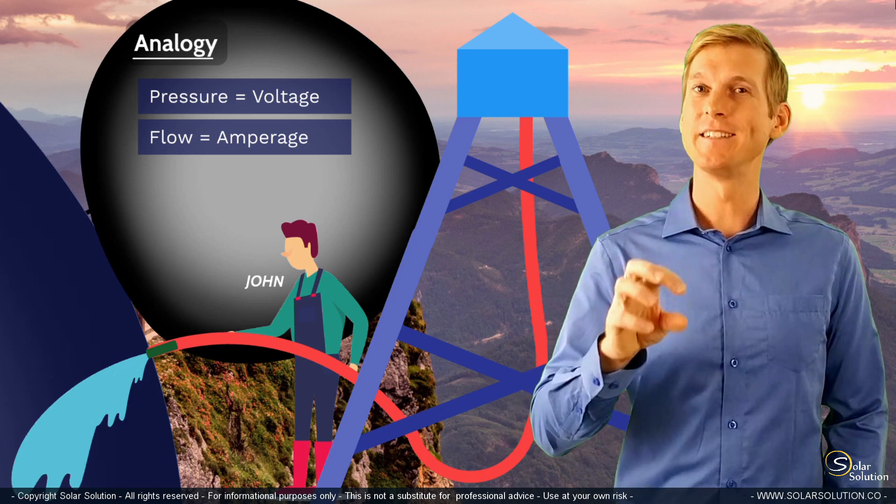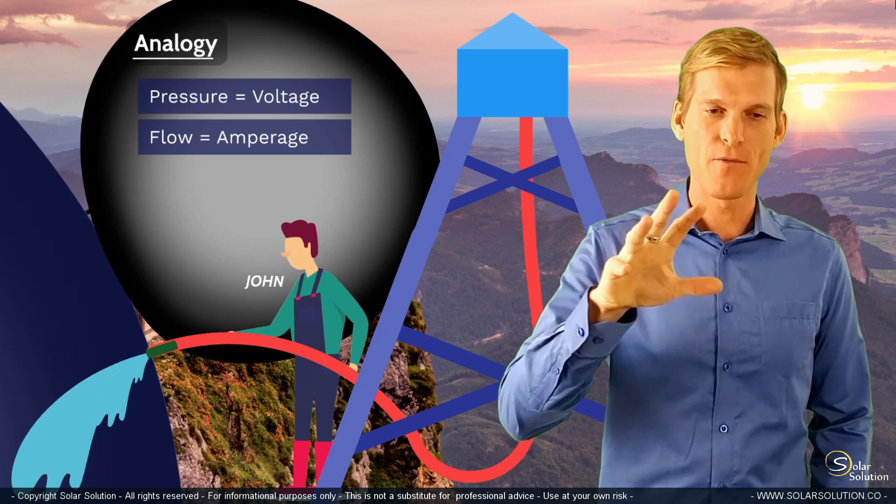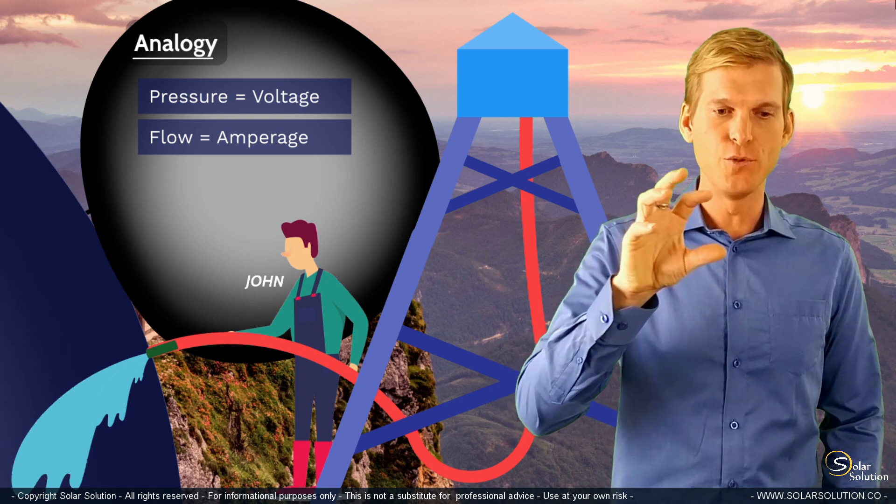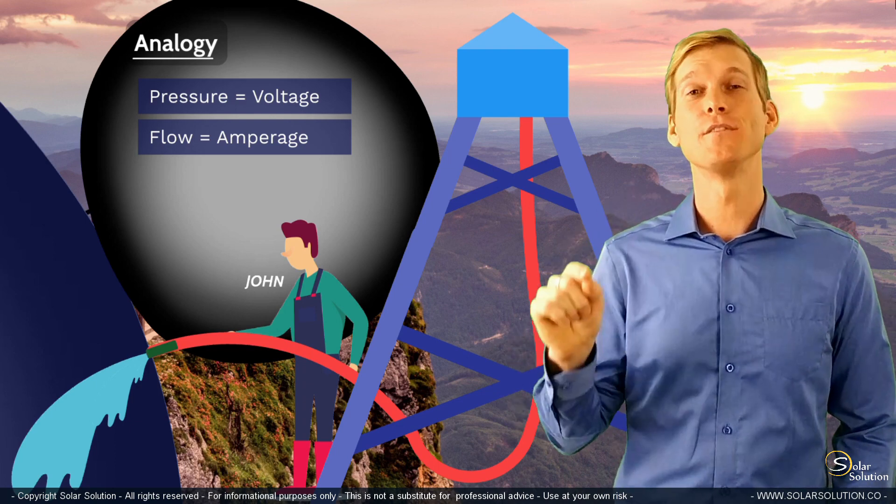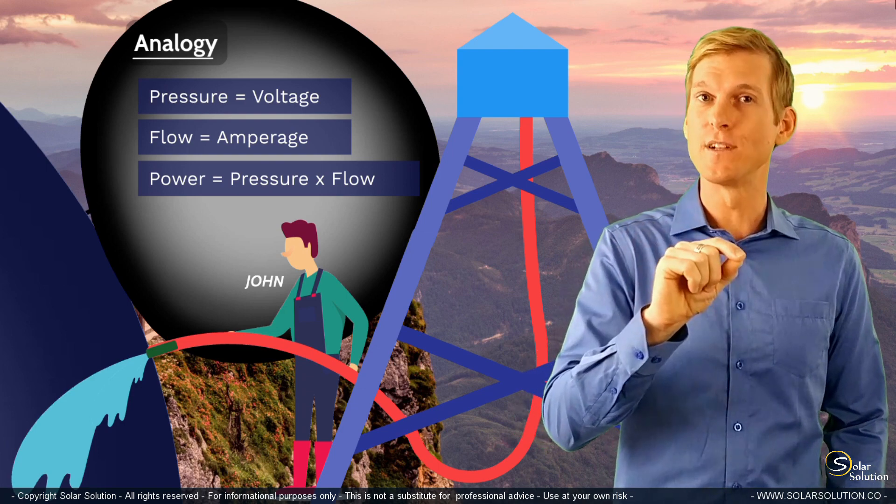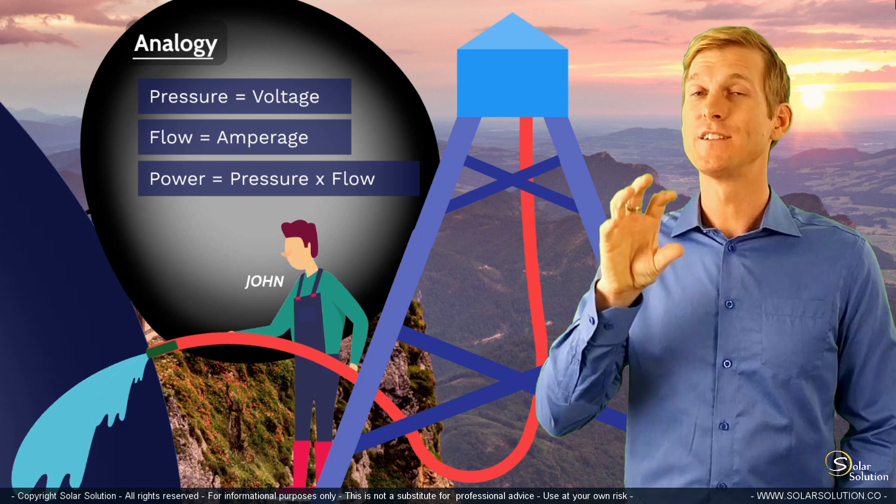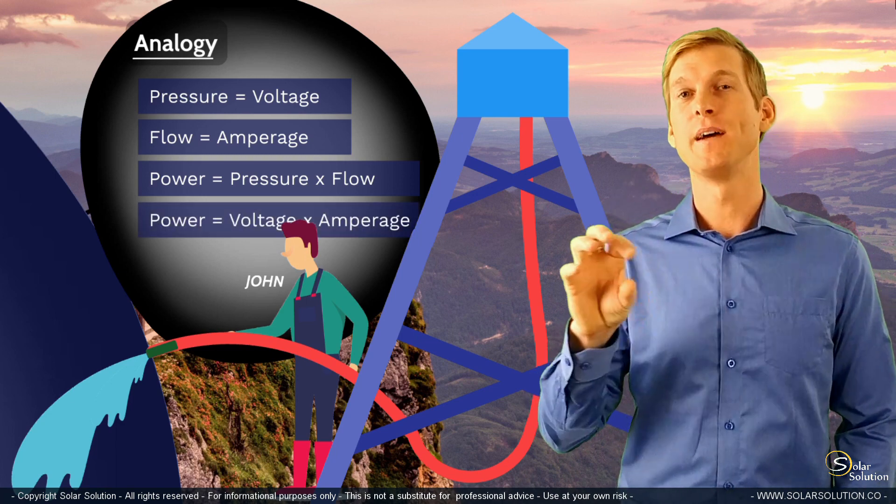I'm explaining in this simple way because I think this makes it very easy to understand that the amount of useful power that you're getting out of the system is the equivalent of the pressure times the flow. And so the electrical equivalent is that the power you're getting out of your electrical system is the voltage multiplied by the amperage.